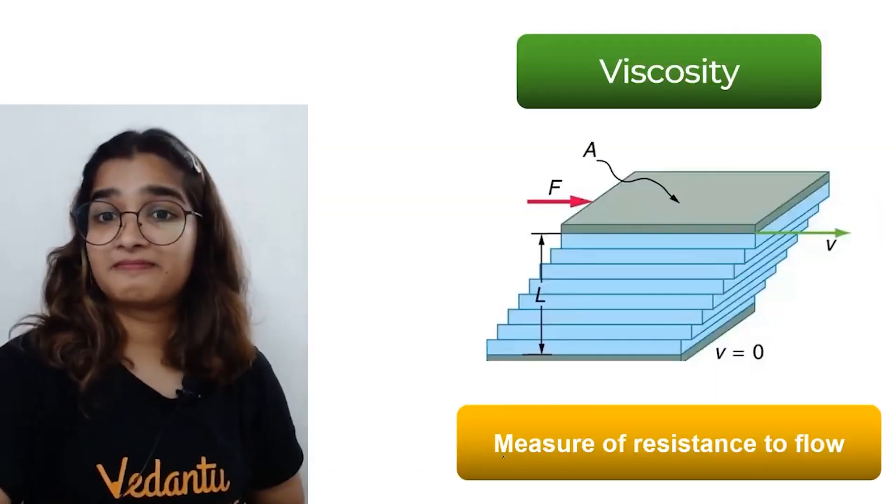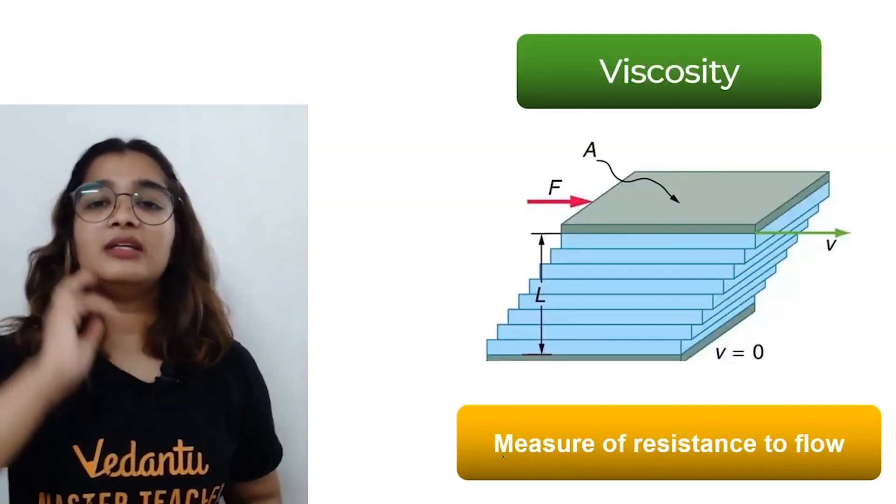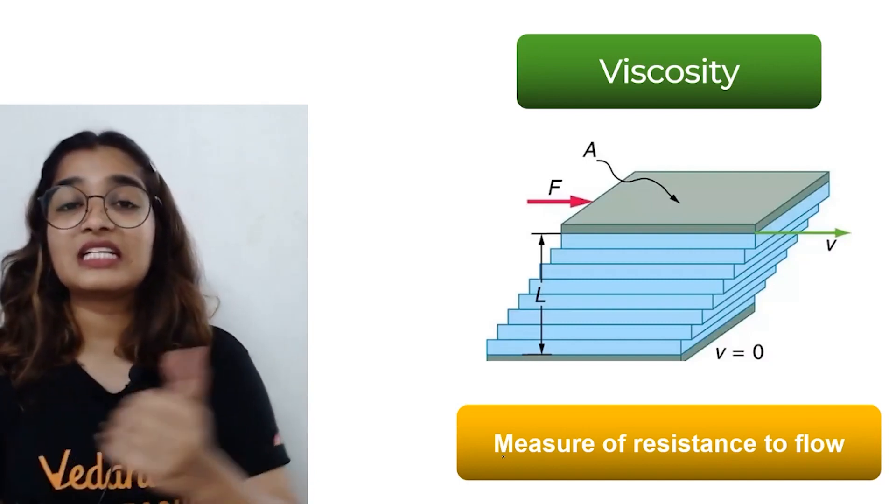Is it solid or liquid? When you look at glass, it seems like a solid — it breaks, it has a definite shape, it's not changing. That is how we define a solid. But there is one property known as viscosity that changes things.